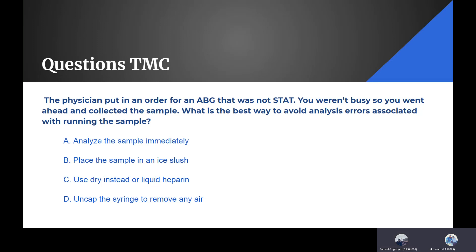We also have another TMC question. This one says, the physician put in an order for an ABG that was stat. You were not busy, so you went ahead and collected the sample. What is the best way to avoid analysis errors associated with running the sample? The answer choices are: analyze the sample immediately, place the sample in ice slush, use dry instead of liquid heparin, or D, uncap the syringe to remove any air. The correct answer is D, uncap the syringe to remove any air. Because like we mentioned earlier, if you have air bubbles, the blood gas will not run properly and sometimes it might not even run at all.